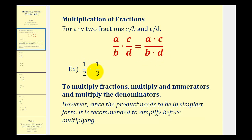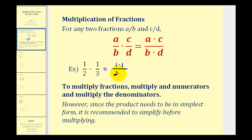So for one-half times one-third, the product will have a numerator of one times one and a denominator of two times three. So the product would be one-sixth.